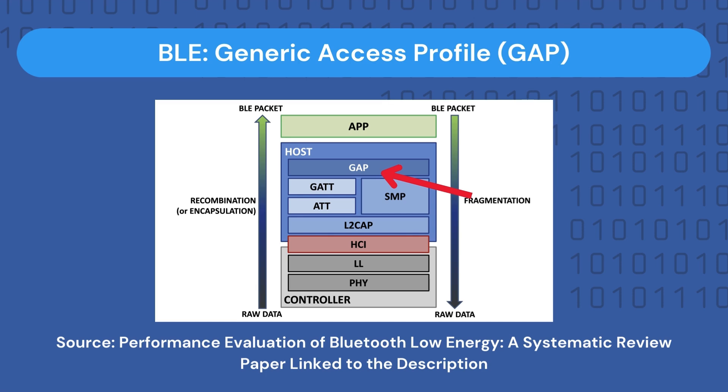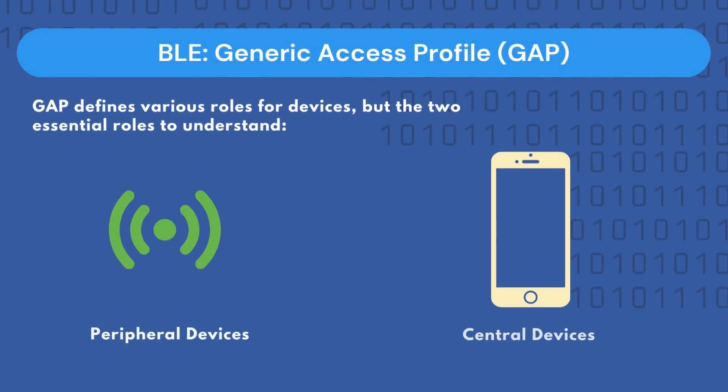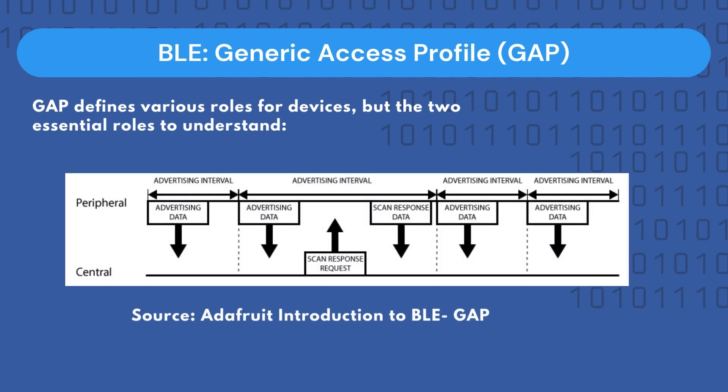GAP defines various roles for devices, but two essential roles to understand are central devices and peripheral devices. Peripheral devices are small, low-power, resource-constrained devices that can connect to much more powerful central devices. Peripheral devices can be things like a BLE-enabled IMU sensor or a BLE-enabled heart rate monitor. Central devices are typically mobile phones or tablets that connect to these sensors and usually have more processing power and memory. With GAP, BLE devices advertise using either the advertising data payload or the scan response data payload. The advertising data payload is constantly transmitted to let central devices in range know that a peripheral device exists.